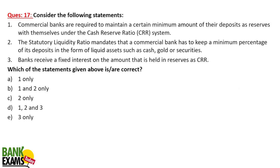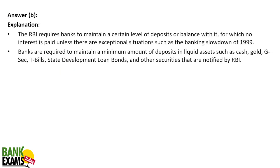Question seven: commercial banks are required to maintain a certain amount of their deposits as reserves with themselves under the CRR system — correct. SLR mandates that commercial banks maintain a minimum percentage of deposits in the form of liquid assets such as cash, gold, and securities — correct. Banks receive a fixed interest on the amount held in CRR — this is false. RBI requires banks to maintain CRR balances for which no interest is paid, unless there are exceptional cases, as in 1999 during the banking slowdown period.